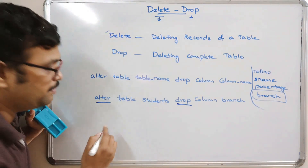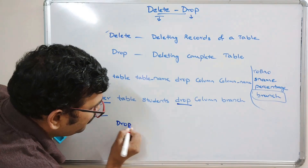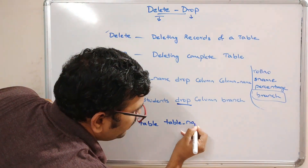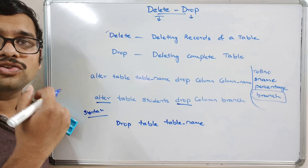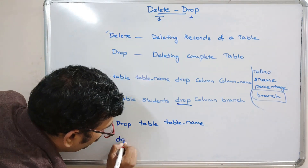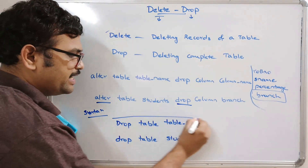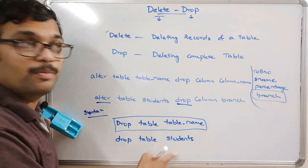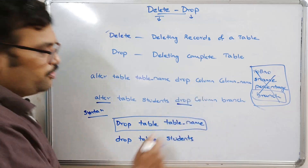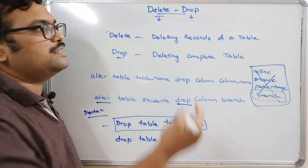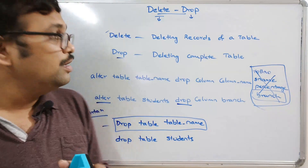ALTER is used to do modifications on fields. To delete the complete table, we use the DROP query. The syntax for drop is: DROP TABLE table_name. This will delete the table itself, and whatever records are available in that table will also be removed. For example: DROP TABLE students — this will remove the students table from the database entirely.